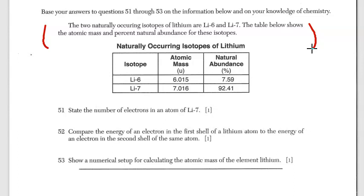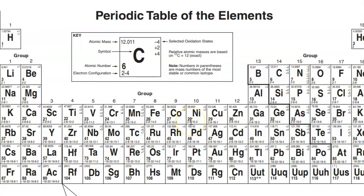For question 51, we have to state the number of electrons in an atom of Lithium-7. The 6 and the 7 are different isotopes for Lithium, and if you remember, isotopes means same number of protons, different number of neutrons. Your protons are not going to change if it's Lithium, and if it's an atom, atoms are electrically neutral, so protons will equal electrons. We need the number of protons. You need to go to the periodic table and look at the atomic number for Lithium.